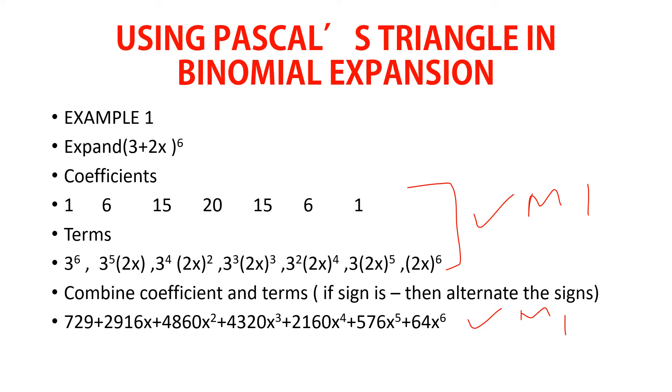So from the Pascal's triangle, you pick the coefficients of power 6. These are 1, 6, 15, 20, 15, 6, and 1. The question does not tell you where to stop. Some questions are specific. You can be told to expand up to the first four terms, so you pick the first four coefficients. You might also be told to expand up to the term where x is raised to power 3. So that will be determined by the next step, the terms themselves.